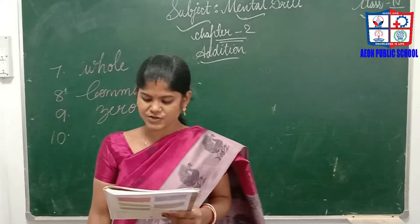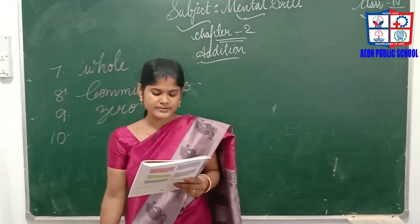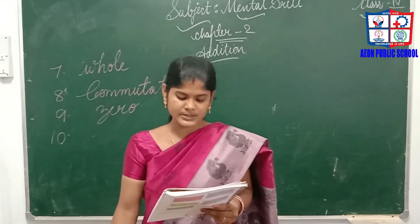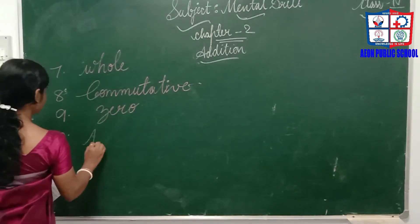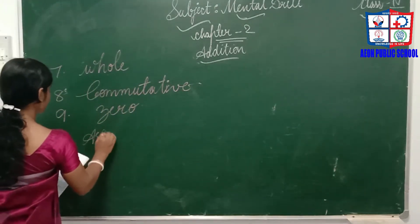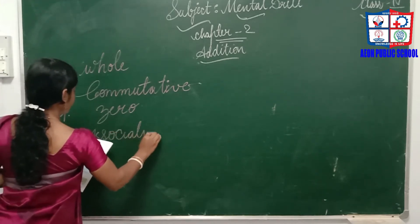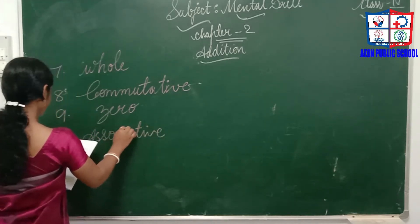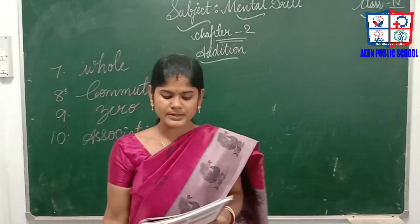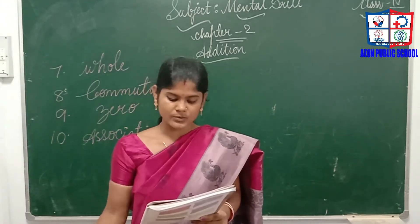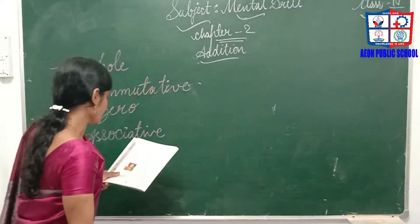The tenth one: the associative property of addition — whole numbers grouped in two ways give the same result. If you interchange the grouping, the result will be equal. That is called the associative property; whole numbers grouped in any way give the same result.